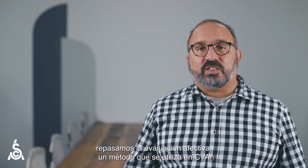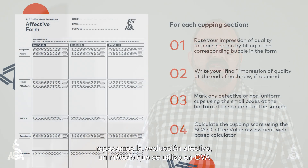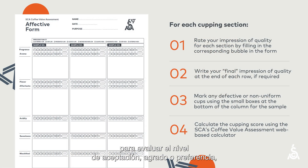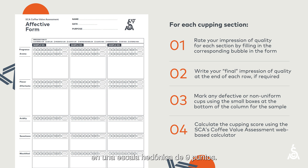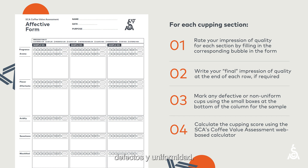Next, we reviewed the affective assessment, a method the CVA uses to assess acceptance, liking, or preference by asking you to rate your impression of quality for each category on a nine-point hedonic scale. This assessment also includes an overall impression of quality, defects, and uniformity.